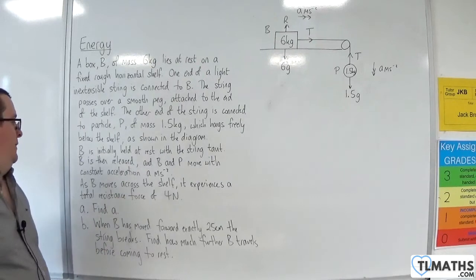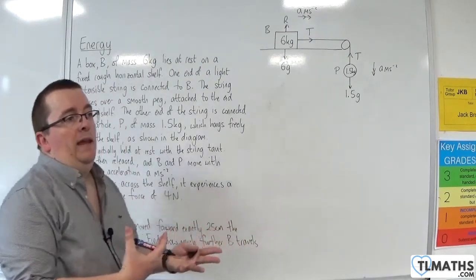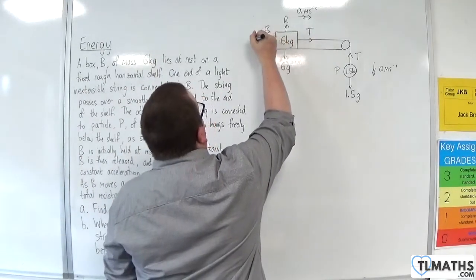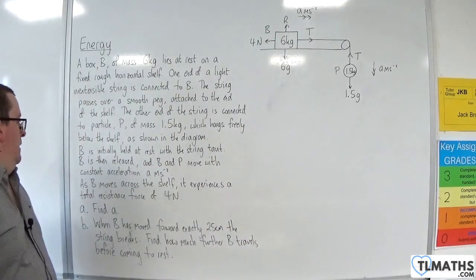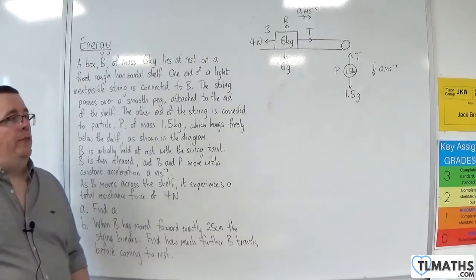As B moves across the shelf, it experiences a total resistance force of 4 newtons. So, that would be friction and air resistance combined, essentially. So, 4 newtons will act against the direction of motion. OK, so part A, find A, the acceleration of the system.